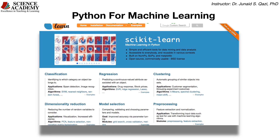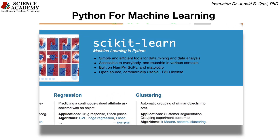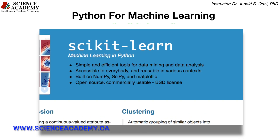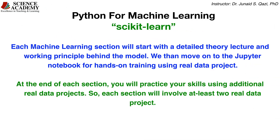Machine learning is one of the most important skills in the field of data science. We are going to use the state-of-the-art machine learning library in Python, which is scikit-learn. We will explore a range of machine learning models including linear regression, logistic regression, k-nearest neighbors, decision trees and random forests, support vector machines, k-means clustering, and principal component analysis. It is very important to know the theory behind each model, so each machine learning section will start with a detailed theory lecture and working principle behind the model.